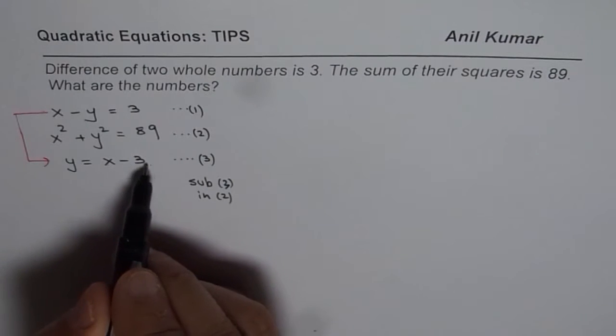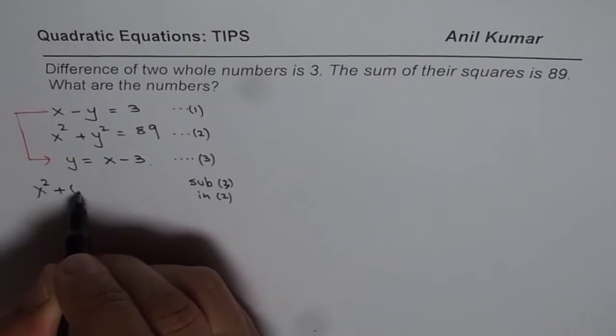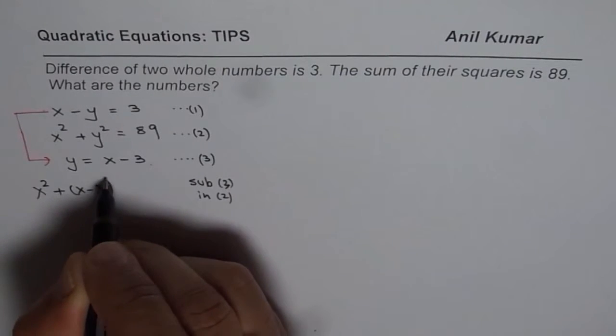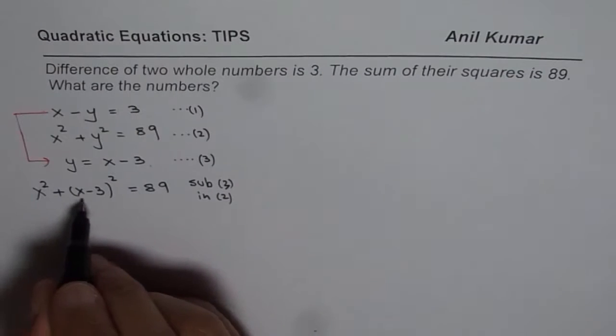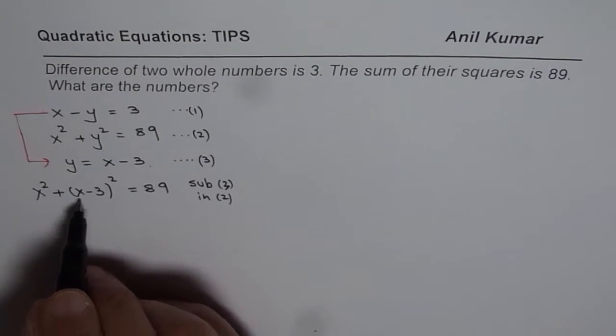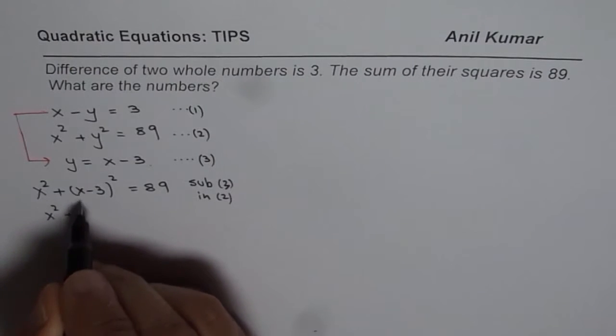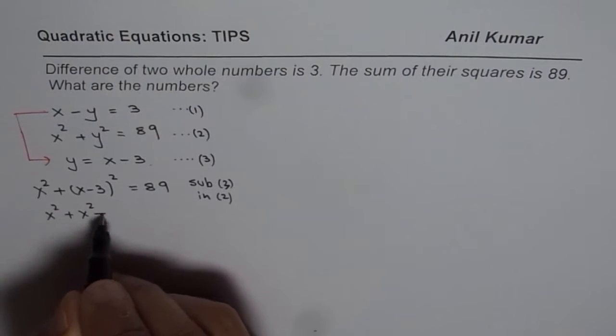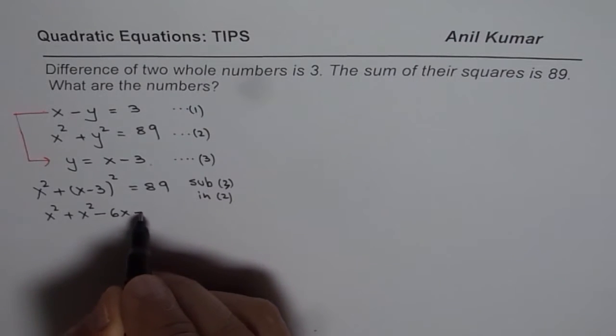Instead of this y, I will write x minus 3. So we get x square plus x minus 3 whole square equals 89. So I have one equation now in x, one variable. Let us expand this. We have x square plus, expanding we get x square minus 2ab, that means 6x plus 3 square, which is 9, equals 89.